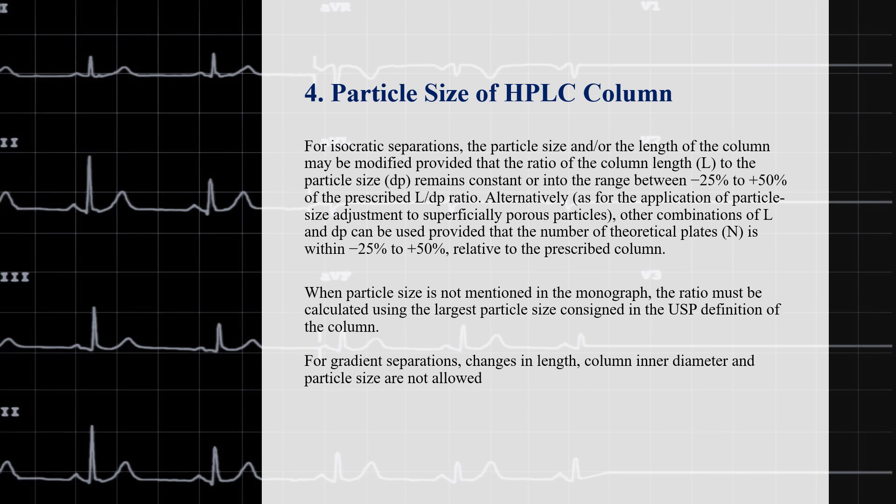So if particle size is not mentioned in the monograph, the ratio must be calculated using the largest particle size consigned in the USP definition of the column.